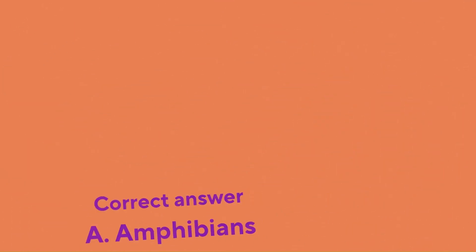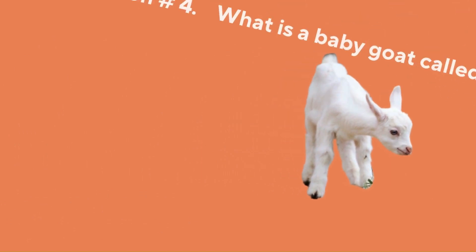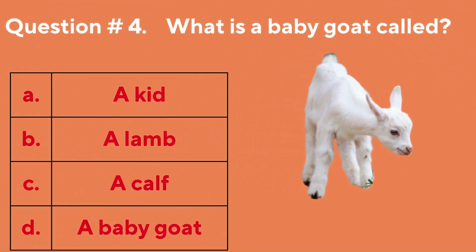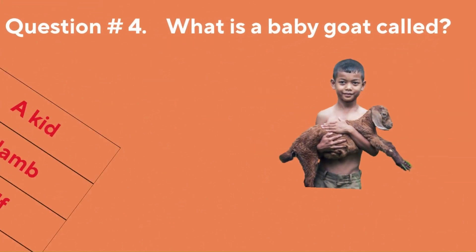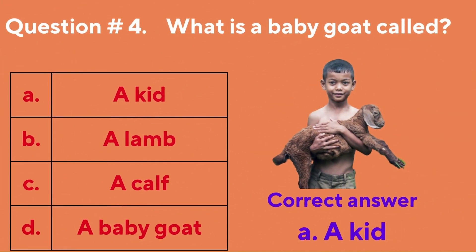Question number four: what is a baby goat called? A. A Kid, B. A Lamb, C. A Calf, D. Baby Goat. The correct answer is A. A Kid.